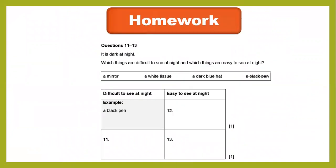Boys, for homework you have to find out what things you can see in the dark. When there is sunlight, what can you see in the dark? We have a mirror, a white tissue, a blue hat, and a black pen. Choose whether each is difficult to see at night or easy to see at night. You have to choose the correct word. Thank you so much boys, take care.